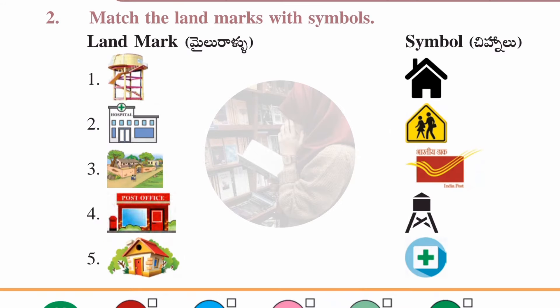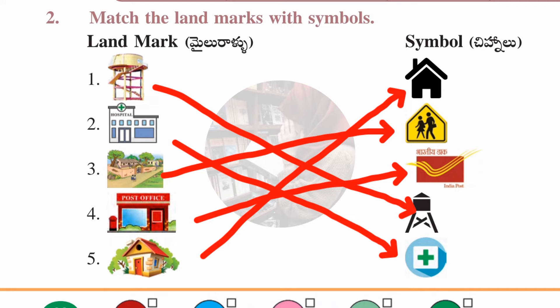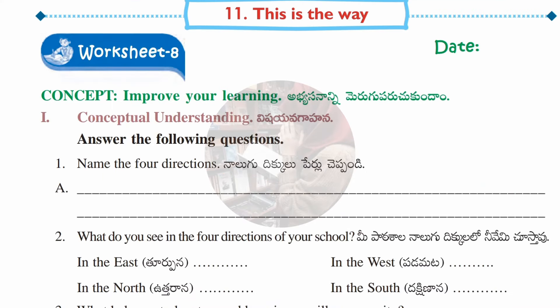The match the following section: landmarks are in the left column and symbols in the right. Match correctly — tank landmark matches its symbol, hospital landmark matches its symbol, neighborhood matches a house symbol, post office matches its symbol, and school matches its symbol.